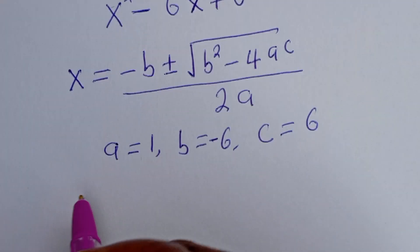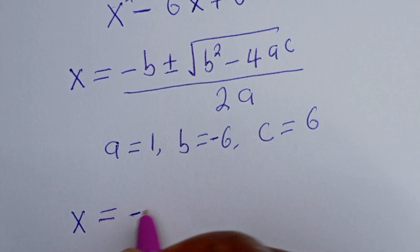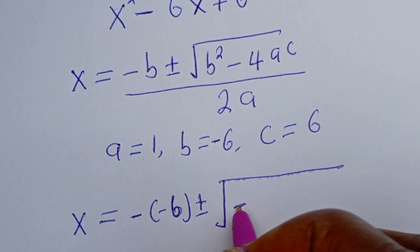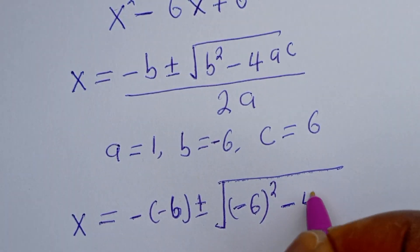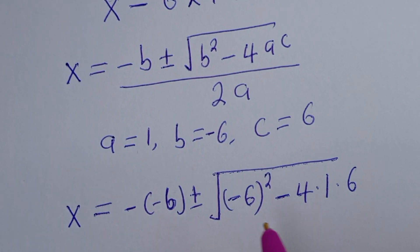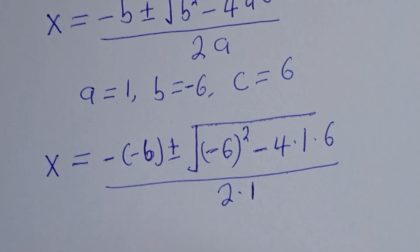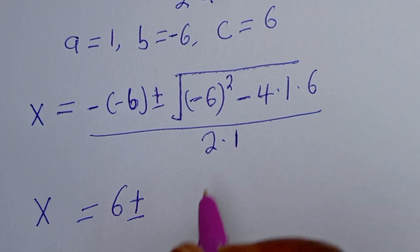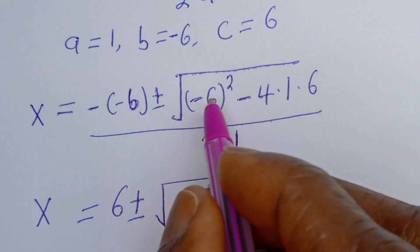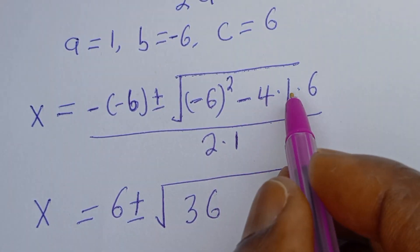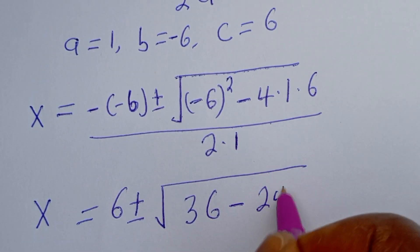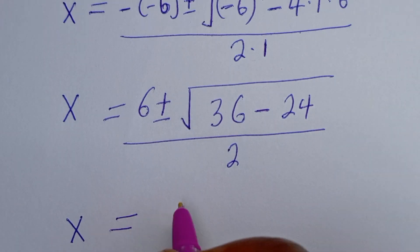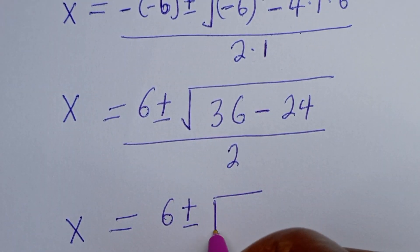Substituting: s equals minus bracket minus 6, plus or minus the square root of minus 6 squared minus 4 times 1 times 6, over 2 times 1. That gives s equals 6 plus or minus the square root of 36 minus 24, which is 12, over 2.